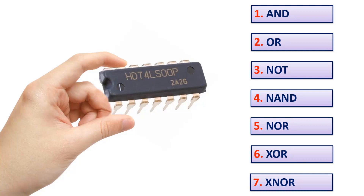Now let's examine the symbols, mathematical expressions, and truth tables of these logic gates one by one. In order for the video not to be too long, I'll explain the AND, OR, and NOT gates in this video. In the next video, I'll explain the other logic gates.